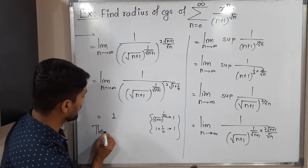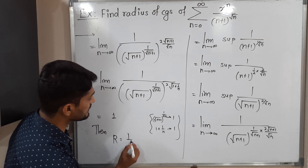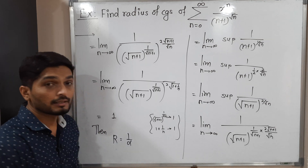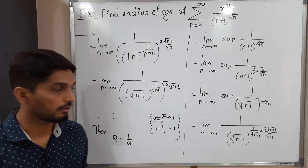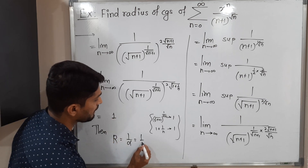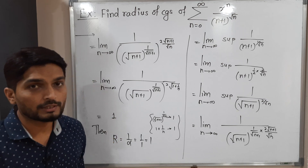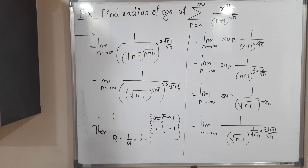The radius of convergence is the reciprocal of alpha. Since alpha = 1, the radius of convergence is 1/1 = 1. So the radius of convergence of the given power series is 1. Thank you, see you.